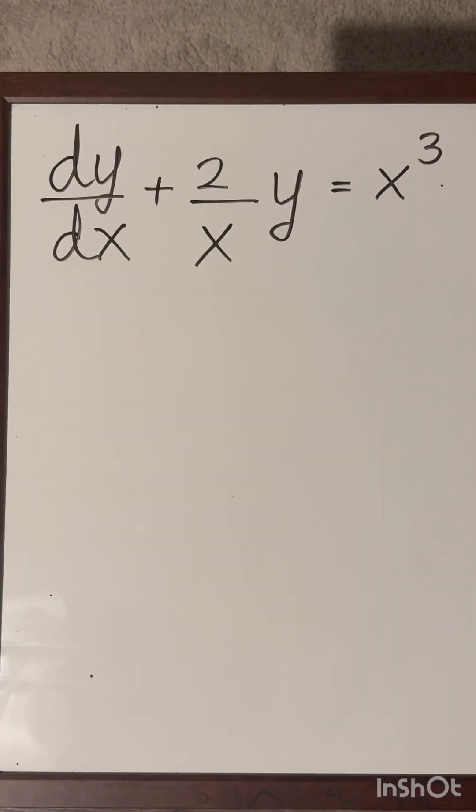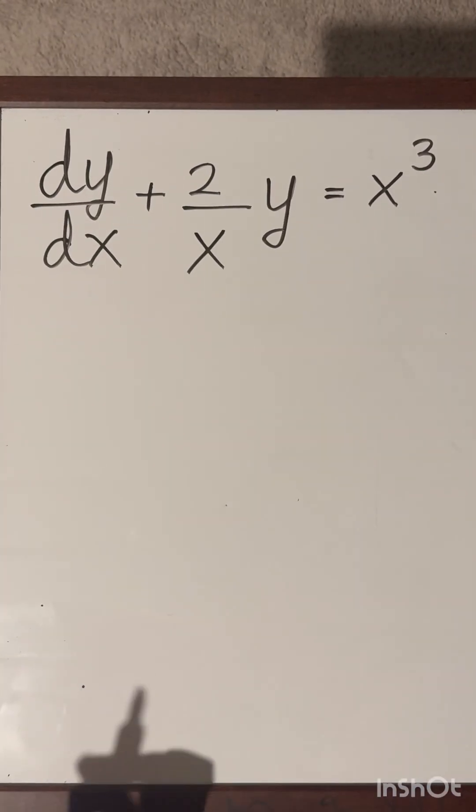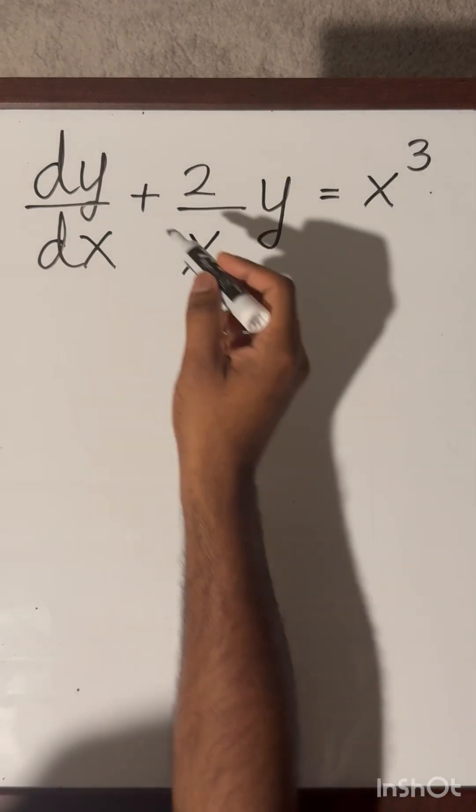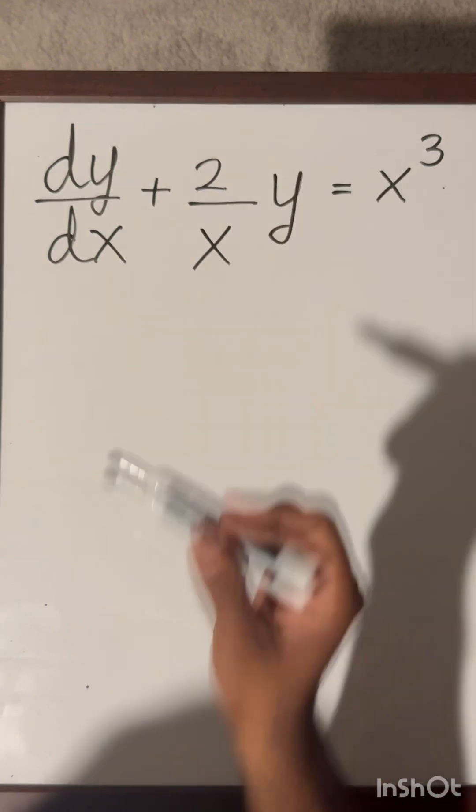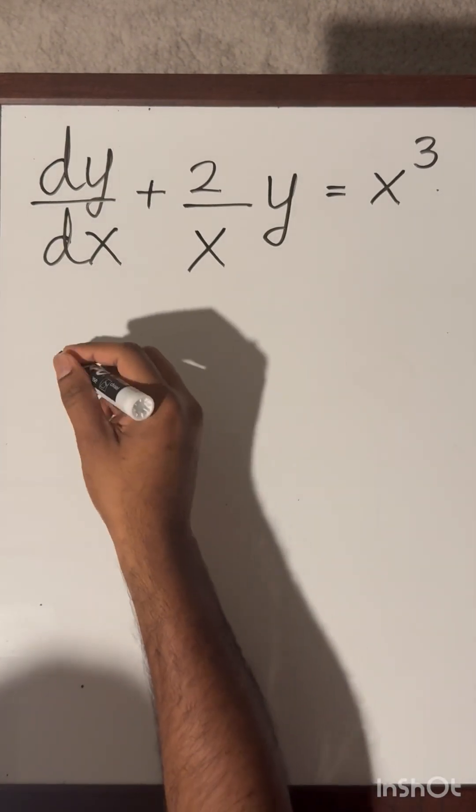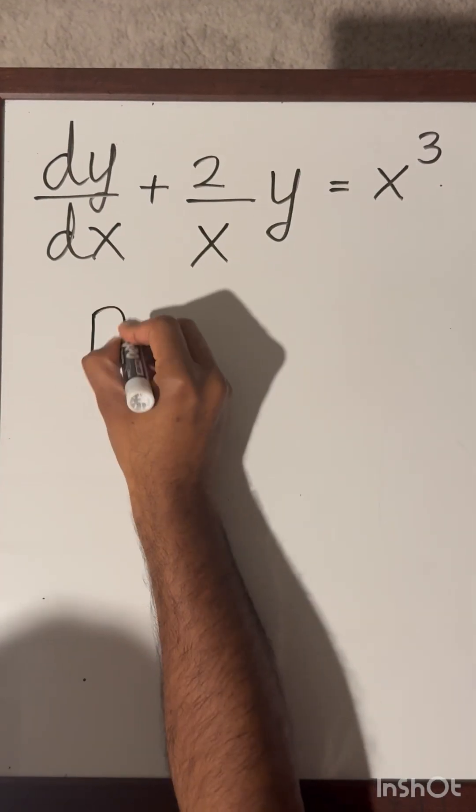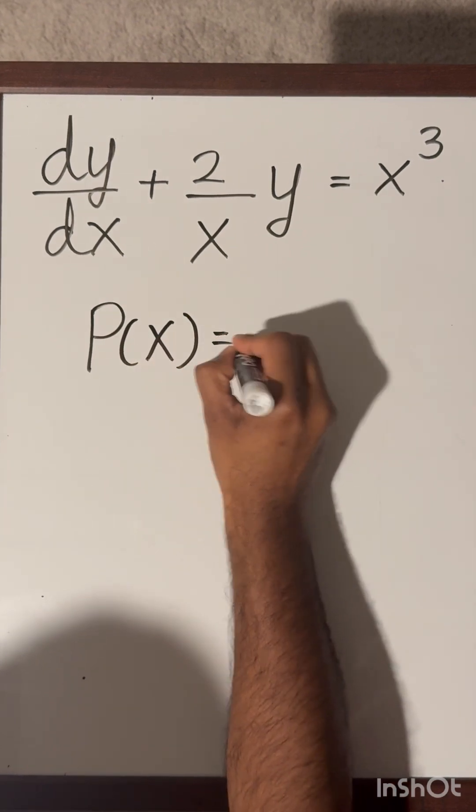Now let's consider this example. You can clearly see that this is already in the standard form because the coefficient of dy over dx is 1. Then we can write down the function p of x which is 2 over x.